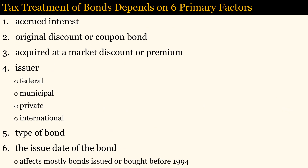Bond taxation is complex because there are six primary factors affecting taxation: accrued interest, whether the bond is an original discount or coupon bond, whether the bond was acquired at a market discount or premium, the issuer, the type of bond, and the issue date of the bond.